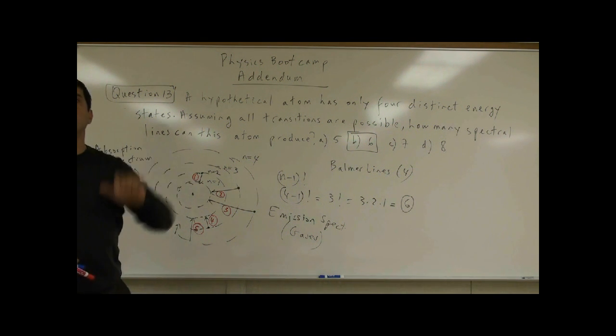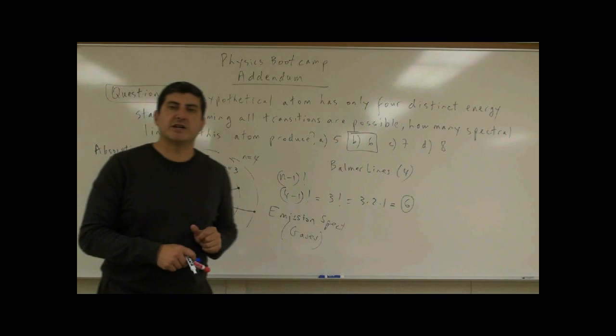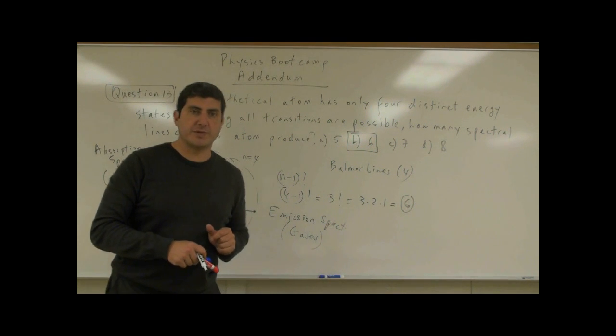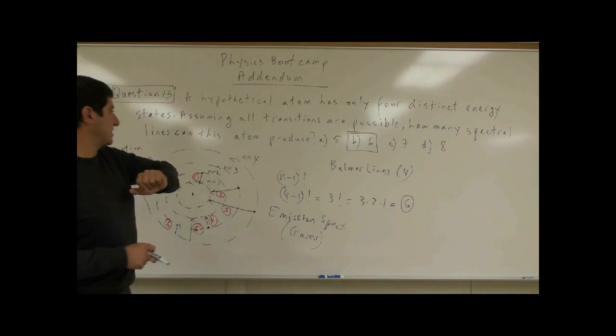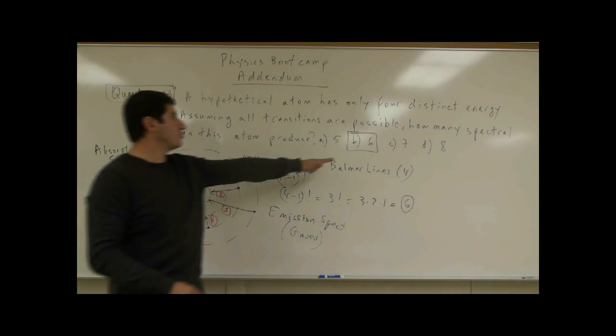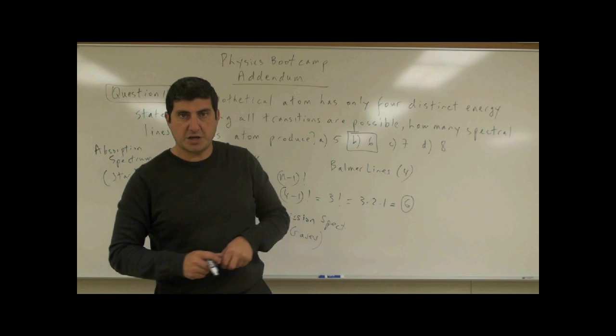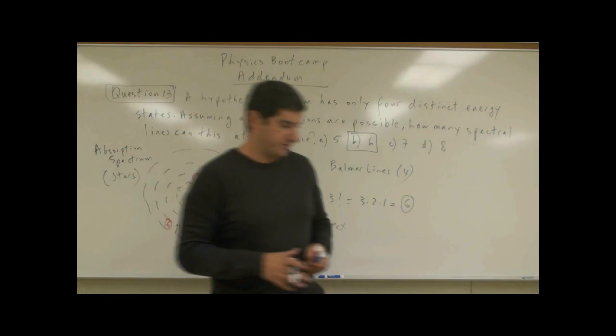So absorption spectrum is given off by stars, and emission spectrum is given off by cool, tenuous gases. In this case, the answer is six. Thank you very much.